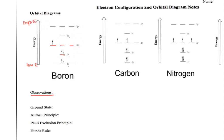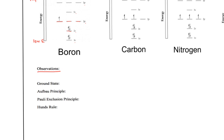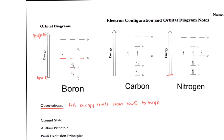The first thing I'm noticing is that we're kind of going from low to high, so we fill the energy levels from low to high. As you can see, for boron, carbon, and nitrogen, the 1s is filled — representing the low energy down here — then we keep filling as we go up higher. We're not filling from the top down.